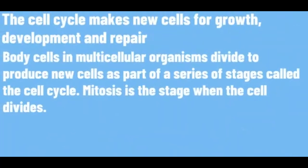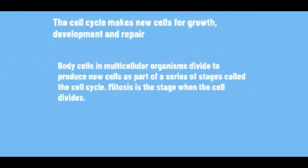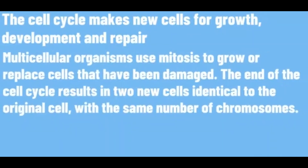The cell cycle makes new cells for growth, development, and repair. Body cells in multicellular organisms divide to produce new cells as part of a series of stages called the cell cycle. Mitosis is the stage when the cell divides. Multicellular organisms use mitosis to grow or replace cells that have been damaged. The end of the cell cycle results in two new cells identical to the original cell, with the same number of chromosomes.